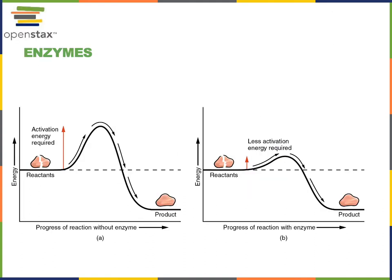An enzyme is a catalyst, and therefore enzymes speed up chemical reactions by lowering the activation energy required for that chemical reaction. The overall Gibbs free energy change of the chemical reaction is not affected by an enzyme. However, by lowering the activation energy, an enzyme can make a spontaneous chemical reaction proceed more rapidly.